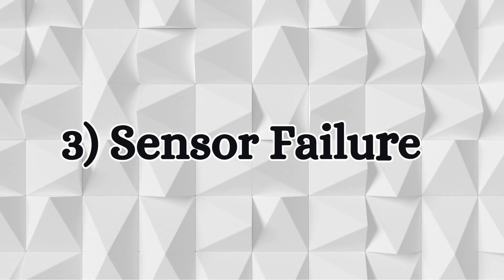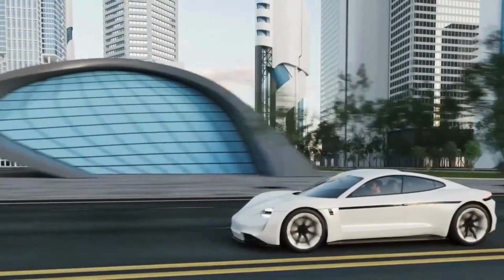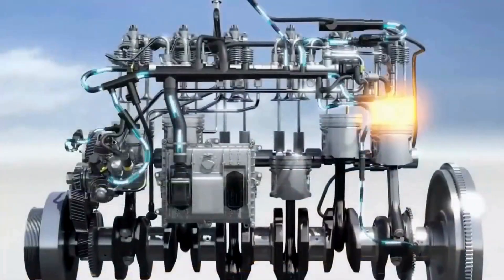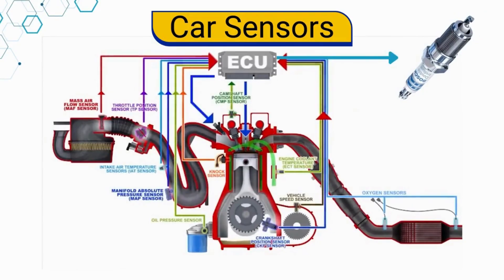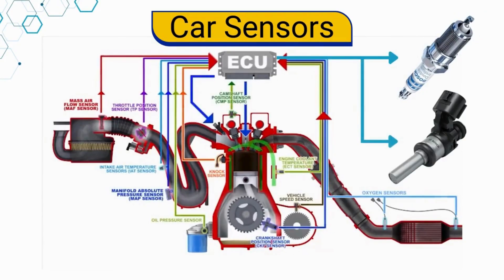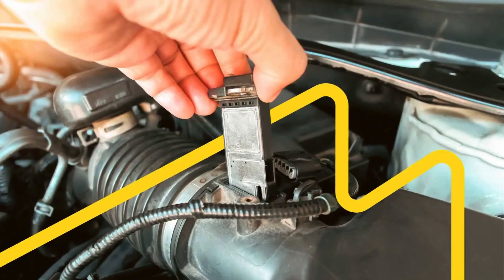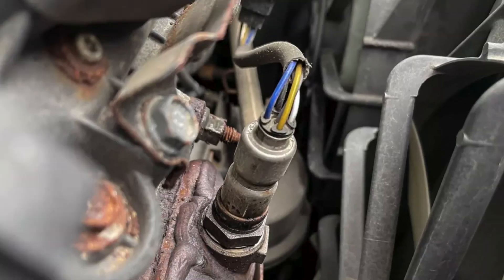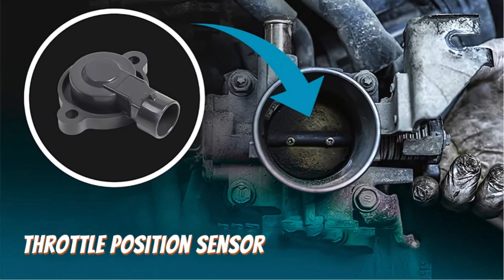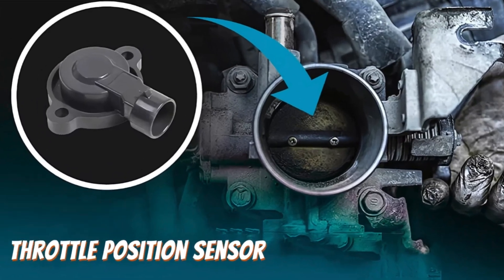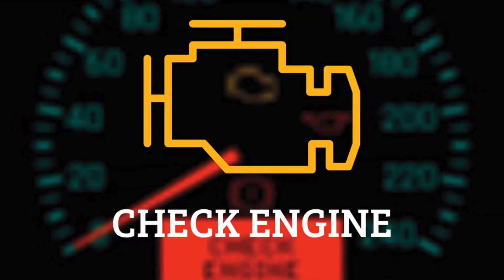Three: sensor failures. Modern vehicles rely heavily on sensors to monitor various parameters. An issue with a sensor, such as the MAF sensor, oxygen sensor, or throttle position sensor, may activate the limp mode.